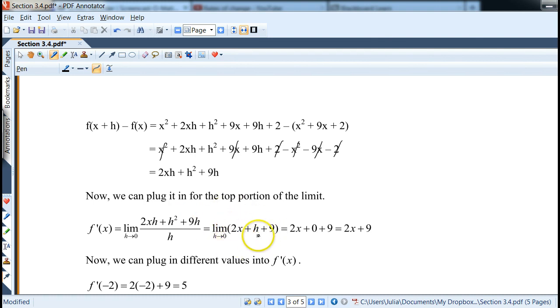And then the idea is the same. Whatever remains, now we can plug in h equals 0. Notice how as soon as I plug it in, we don't have a limit already. We evaluate it. And so the remaining function is 2x plus 9. And that's our derivative function.